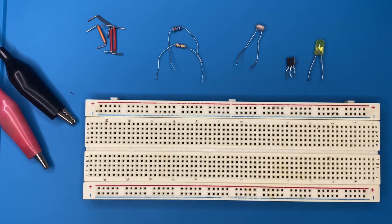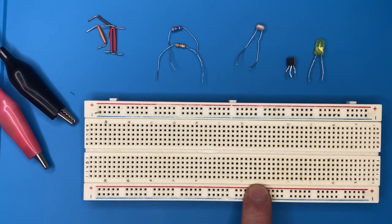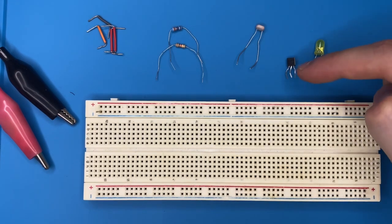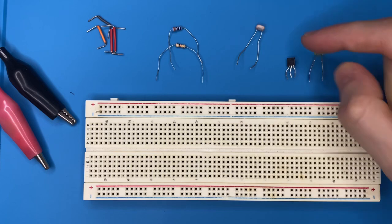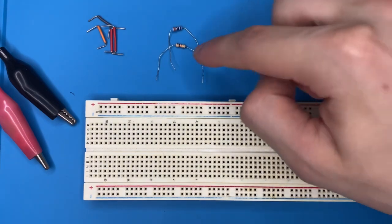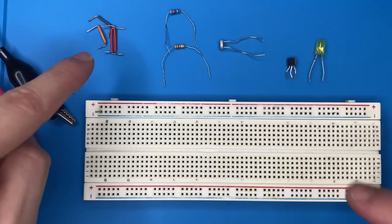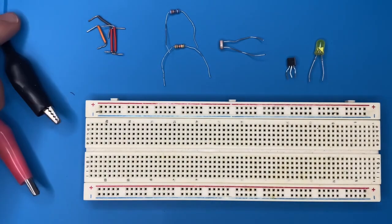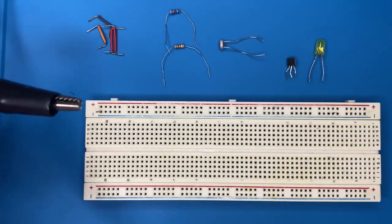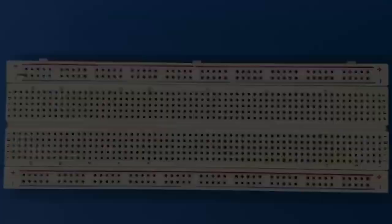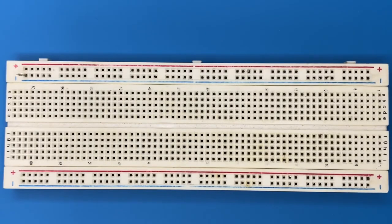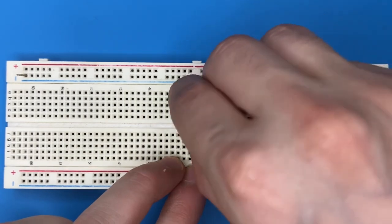These are the components required for this project: a breadboard, LED, BC547 transistor, LDR, 1 kilo ohm resistor, 330 ohm resistor, jumper wires, and a 5 volt power supply. Let's begin by connecting the BC547 transistor to the breadboard.